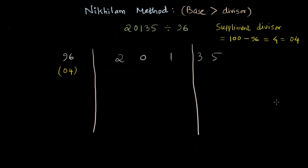Now let's see how we can complete this Nikhilam method. Let's pull this two downwards. Now our supplement divisor has two digits, one is zero and the other is four. So first multiply zero with two and four with two later. Zero times two gives us zero, and then four times two gives us eight. The result is basically zero eight. We start writing this result from the second digit of the dividend, so we write zero and eight.